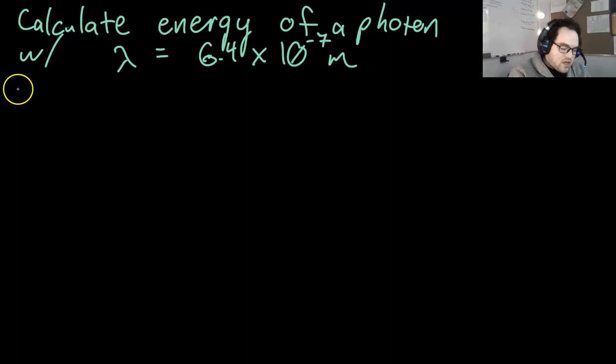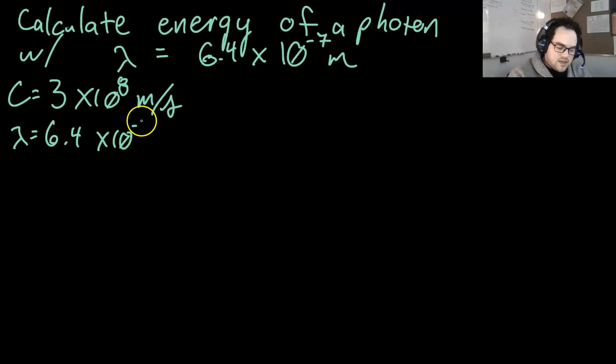We know C. Well, yes, we know C. C is 3 times 10 to the 8th meters per second. Wavelength is 6.4 times 10 to the negative 7th meters. Nu, frequency, is what?